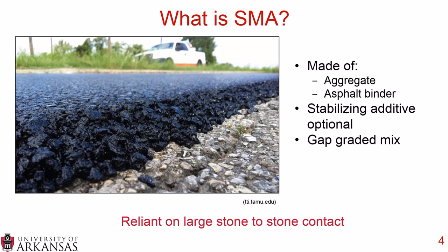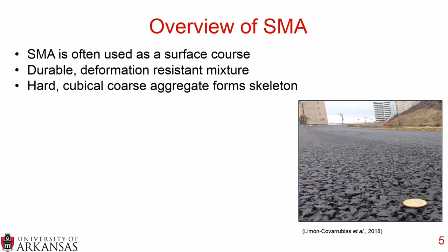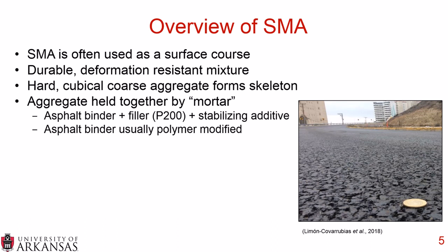SMA is often used as a surface course — just the very top of the pavement structure. It's designed to be durable and resistant to deformation. To achieve this, you use hard cubicle coarse aggregate, which provides the stone-on-stone contact forming the skeleton of the SMA. These large, hard, cubicle coarse aggregates are held together by mortar — asphalt binder plus filler, which is the P200 material, along with a stabilizing additive. The asphalt binder is usually polymer modified.